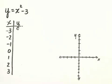We're asked to graph the equation y equals x squared minus 3, and we'll select integers for x, starting with negative 3 and going to positive 3.